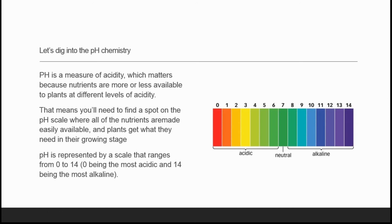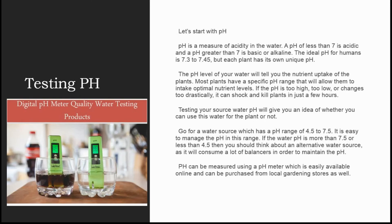We'll switch to our next slide. Now the most important part is to test pH. pH is a measure of acidity in the water. A pH of less than 7 is acidic and a pH greater than 7 is basic or alkaline.